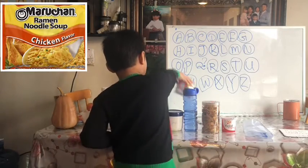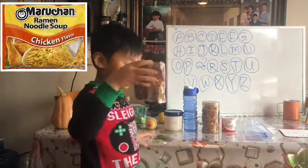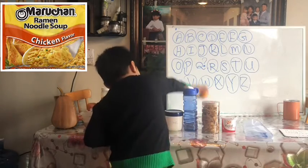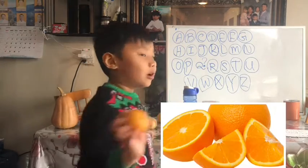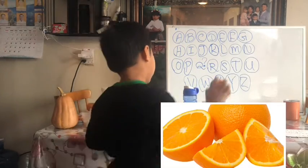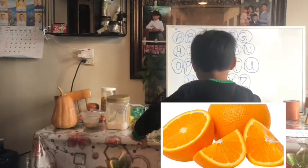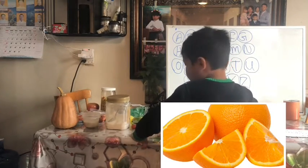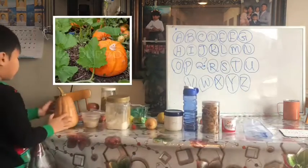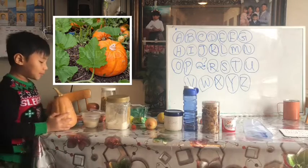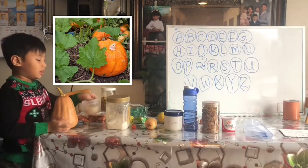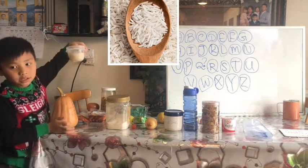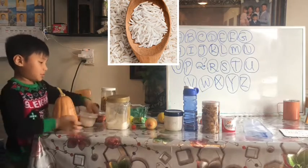N is for noodle, O is for orange, P is for pumpkin, R is for rice.